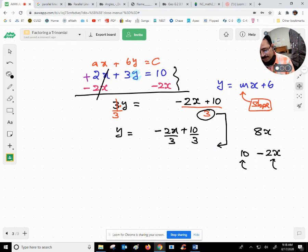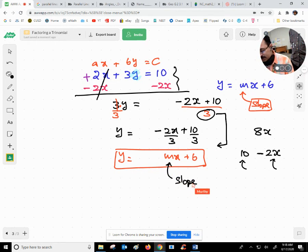Now, this is in the form of y equals to mx plus b, mx plus b, and all of us know that m represents the slope.